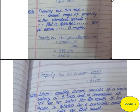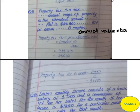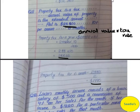Question number 11: property tax is levied on the annual value of a property. A flat has an annual value of $28,800 and a 10% property tax rate. We need to find the tax for 6 months. Property tax formula is: annual value multiplied by tax rate. So $28,800 multiplied by 10 over 100 gives the annual property tax. To find 6 months' tax, we divide by 2.